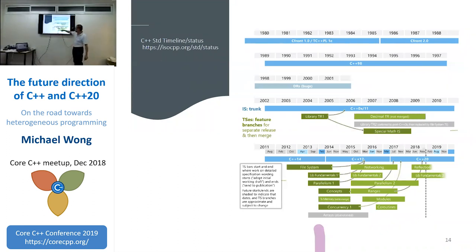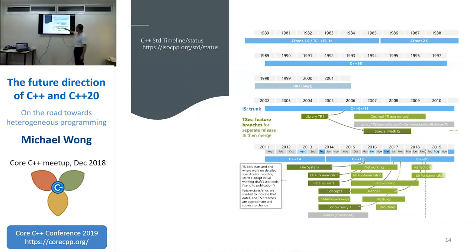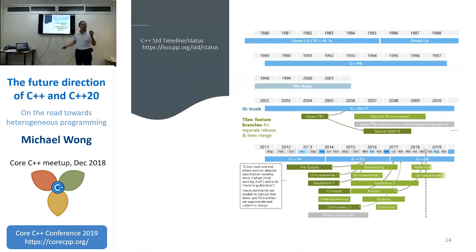There are a whole bunch of other specifications now trying to go into C++20. As of the latest results from San Diego, which happened about a month ago: concepts have been merged, part of concurrency is in, ranges have been merged — all of these are still pending final ratification.